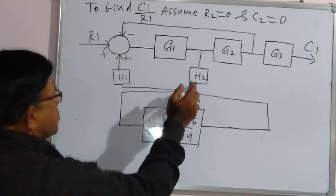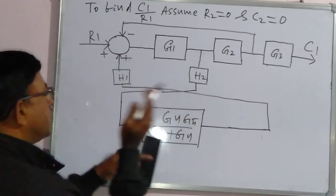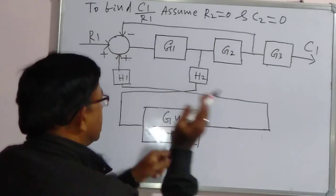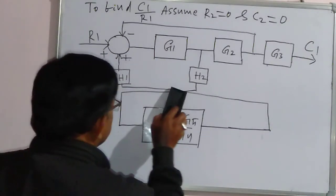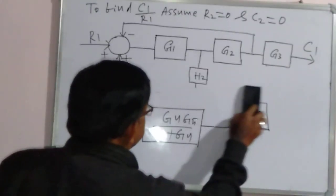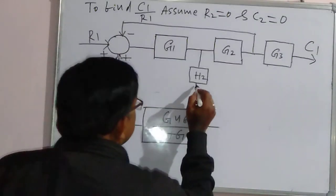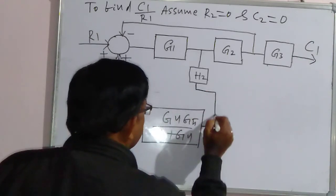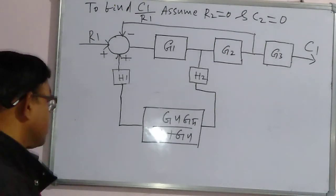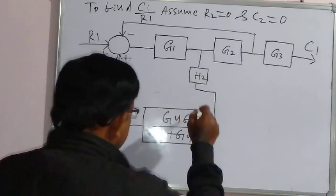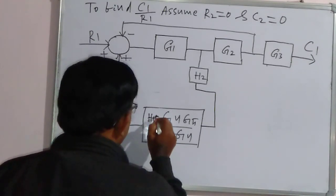Here H1 and H2 are in series with each other. If we fold like this, it will simplify. Now again it is simplified — these three blocks are connected in series or in cascade, therefore this forms H1·H2.